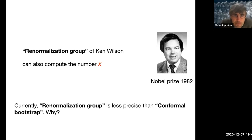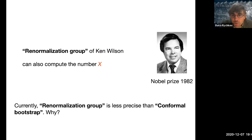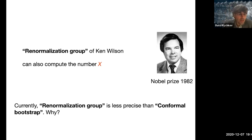The renormalization group method is less precise — the conformal bootstrap method computes this number x with better accuracy. I'm mostly working on the conformal bootstrap method, but I'm also quite curious about the renormalization group idea and trying to understand how it can perhaps be improved and made more precise. In general I think it's quite exciting that there are these two different, complementary points of view on the same problem of total universality — actually quite different, almost orthogonal — which can compute the same number and explain universality but from two different points of view.